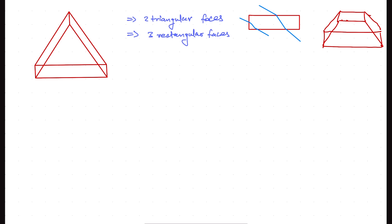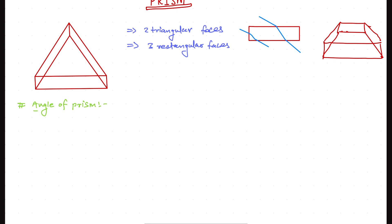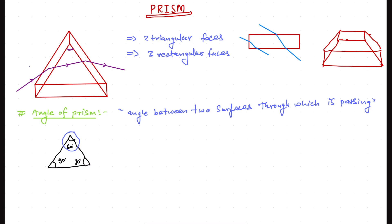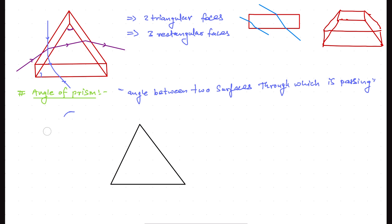In the prism, we first define the important quantity known as the angle of prism. If I give you a prism with cross-section angles of 60°, 90°, and 30°, and ask what is the angle of prism, you might say 60°. Generally, we think the top angle is the angle of prism. But that is not correct. The angle of prism is the angle between the two surfaces from which the ray is passing. In diagrams, we generally denote the angle of prism as A, and for a typical setup, the top angle is our angle of prism.